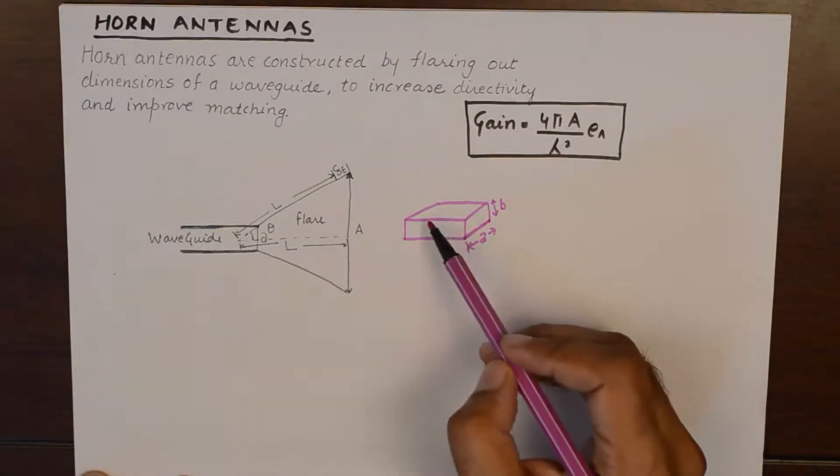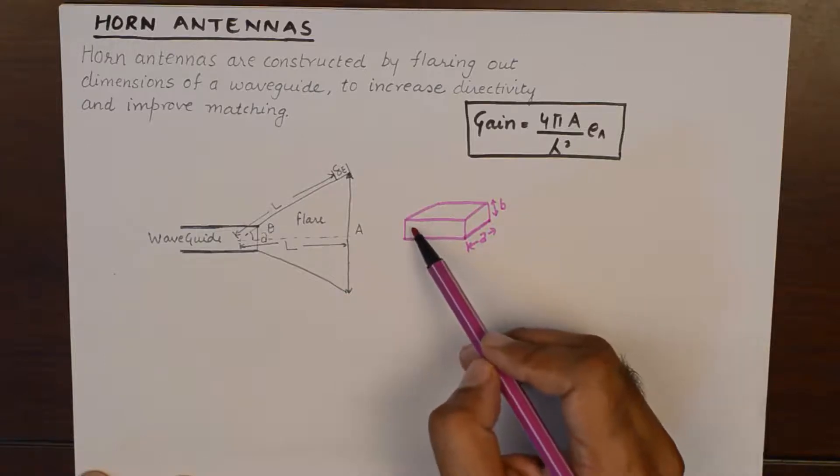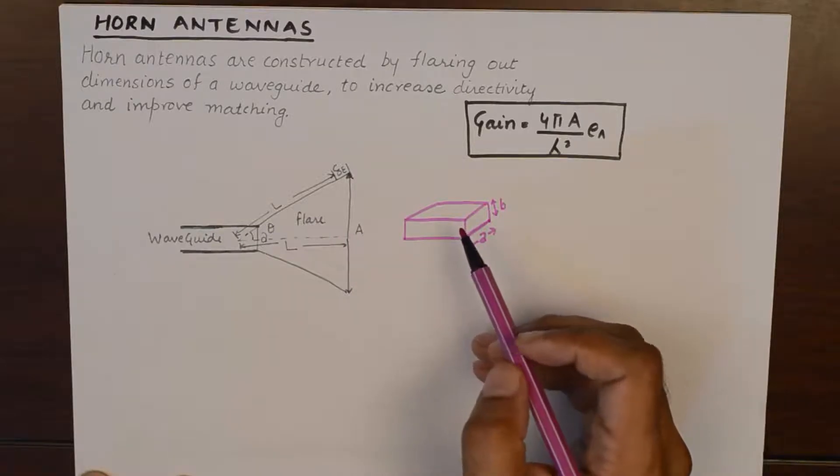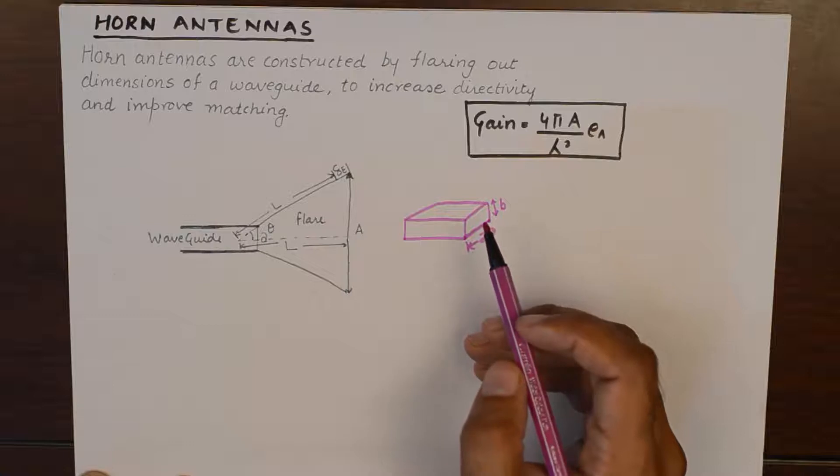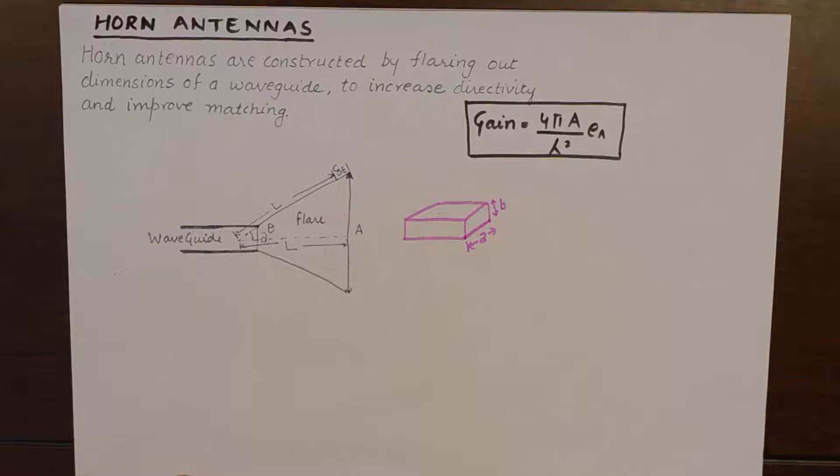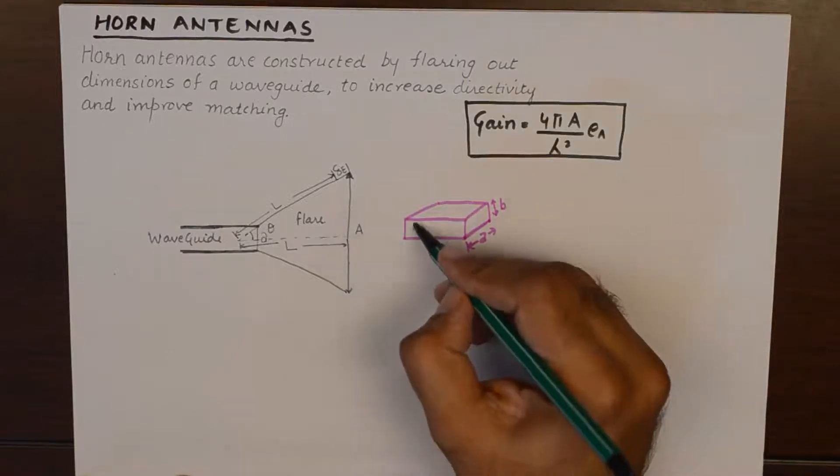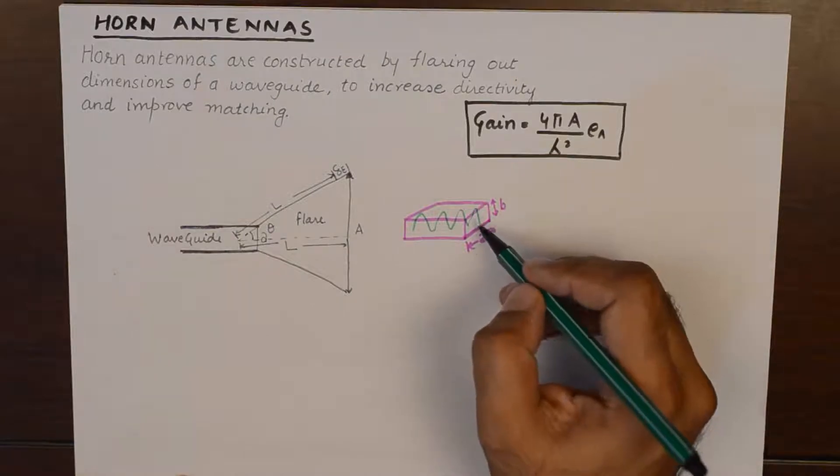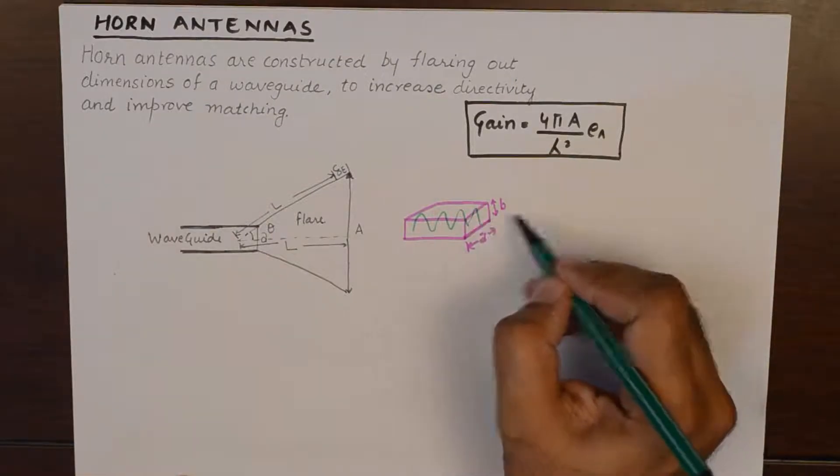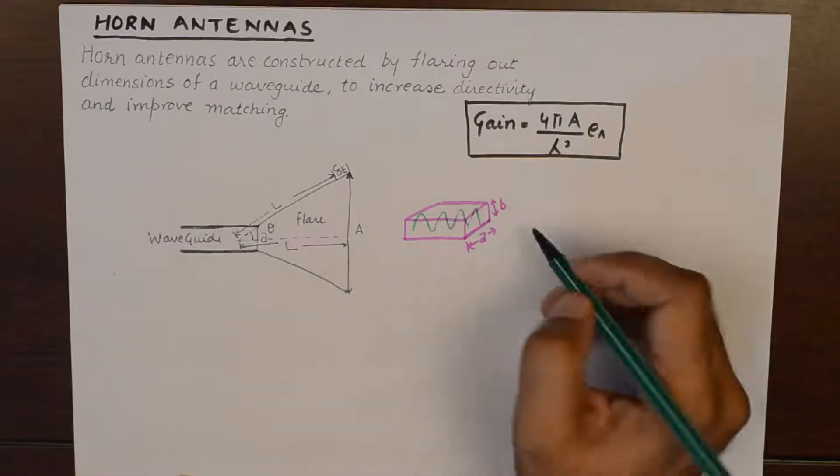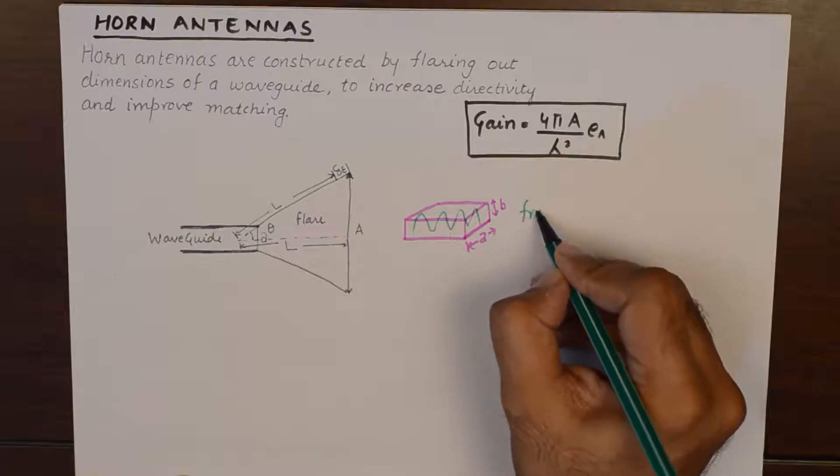These waveguides are carrying signals in the range of Gigahertz or in other words they have wavelengths of few centimeters. So if a waveguide is carrying signal inside it and if it has to radiate that signal into free space, it has to match the impedance of free space.